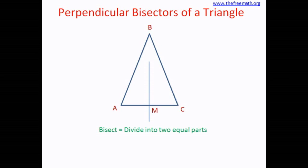When they say perpendicular bisectors of a triangle, these bisectors are bisectors of the sides of a triangle. So it's really the perpendicular side bisectors. If you look at the side AC here, M is the midpoint of the side AC. So if there is a segment drawn at the point M, which divides the side AC into two equal parts, that would be a side bisector.